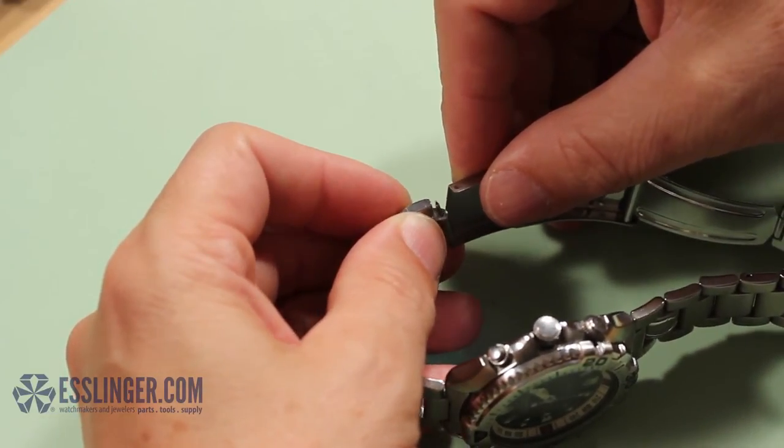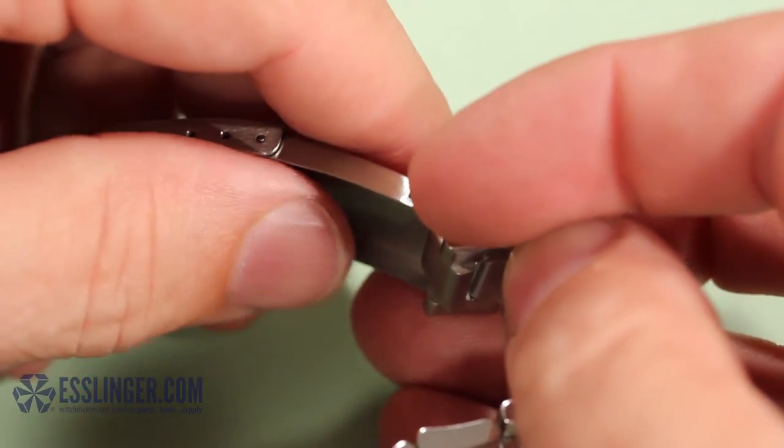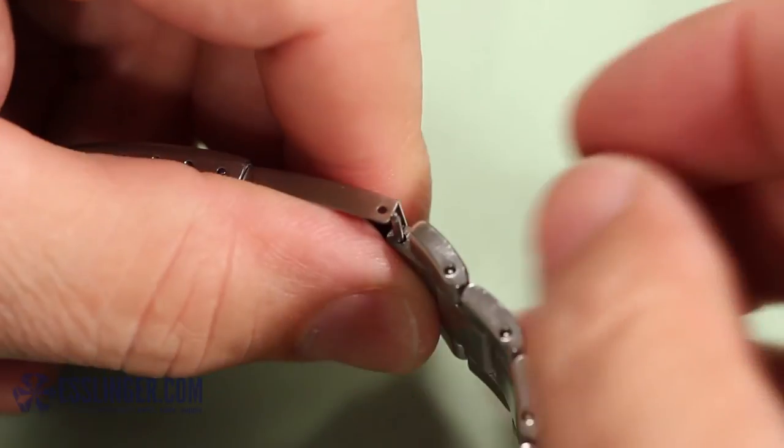Holding the watch band on its side, fit the loose end of the watch band into the free end of the extender so that the bottom end of the spring bar fits into the hole in the extender.